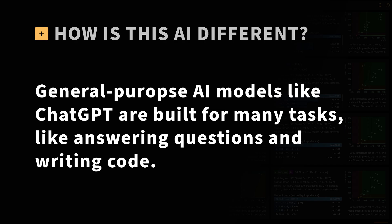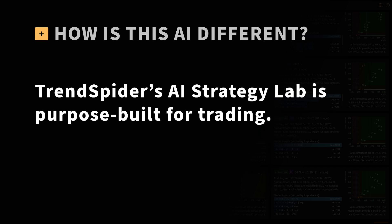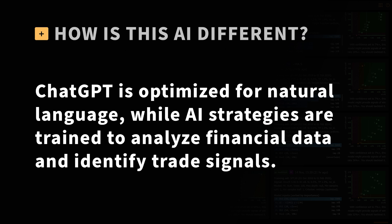How does this AI differ from tools like ChatGPT? While general-purpose AI models like ChatGPT are built for a wide range of tasks, such as answering questions and writing code, TrendSpider's AI Strategy Lab is purpose-built for trading. ChatGPT is optimized for natural language, while AI strategies in the lab are specifically trained to analyze financial data and identify trade signals.